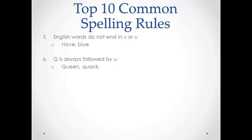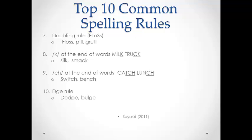The sixth rule involving Q is also a simple rule to teach children. In English, Q is always followed by a U. When I was teaching very young children, I would tell them that Q is a queen and she is not allowed to go anywhere without her bodyguard, U.